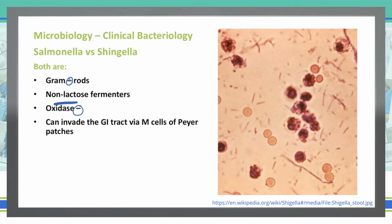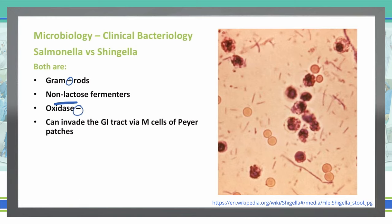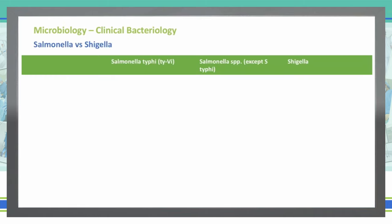So if you see gram-negative rods in Peyer's patches, it's probably going to be Salmonella or Shigella. You've got to remember that it could be either of those, so we need to investigate further to determine which particular one we're dealing with, and then what particular treatment we need to use. We're specifically going to talk about two different types of Salmonella: Salmonella typhi, and then all the other Salmonella species except typhi, and then Shigella will be in the third column.